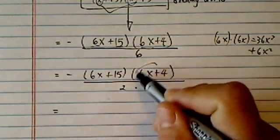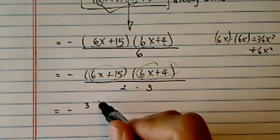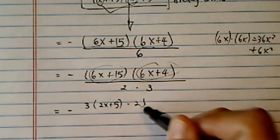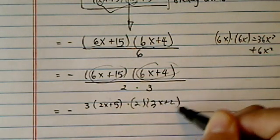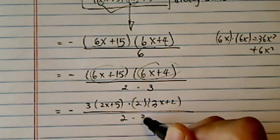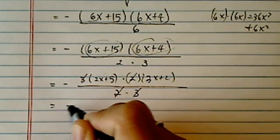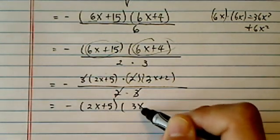Now this part has a 2, this part has a 3 in common, so I'm taking care of it. Let's take the 3 out for the first one, I have 2x plus 5 over here, and then let's take 2 out for the second one, I have 3x plus 2 here. Okay, now divide it 2 times 3, I'm almost home free. 2 goes away, 3 goes away, and the answer is minus 2x plus 5, 3x plus 2. Okay, that's my final answer.